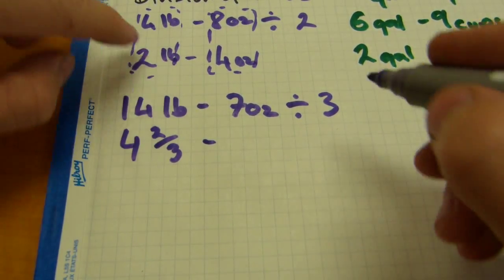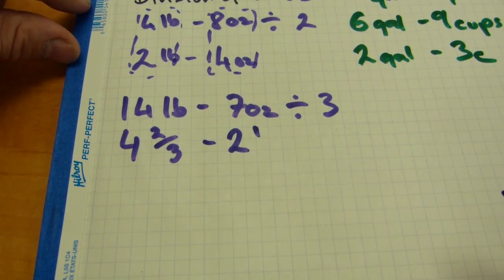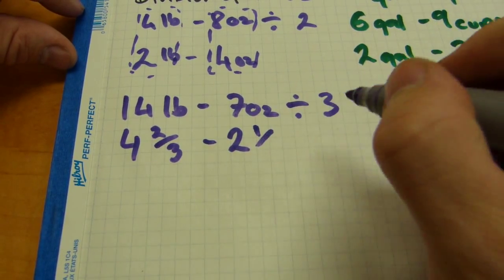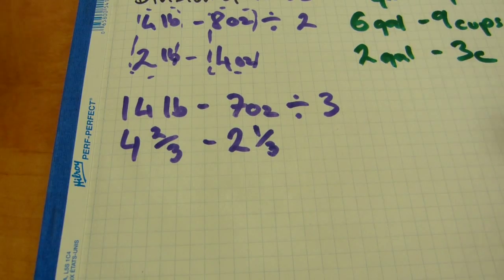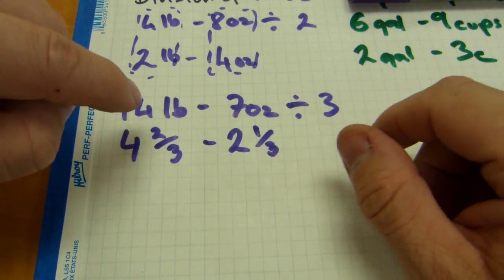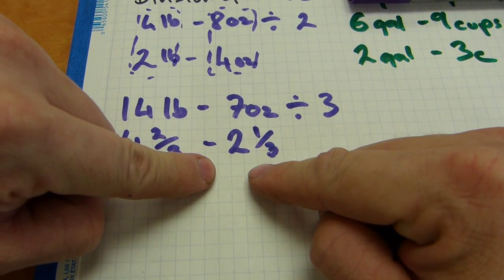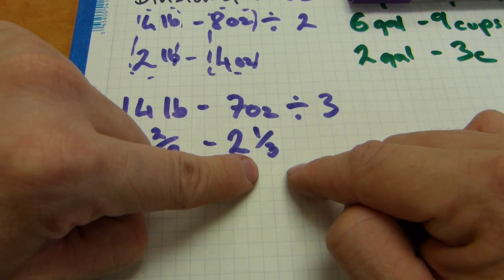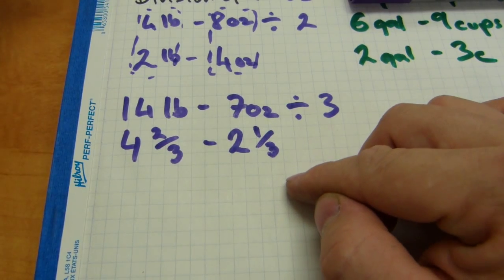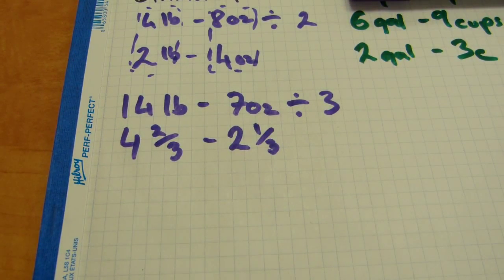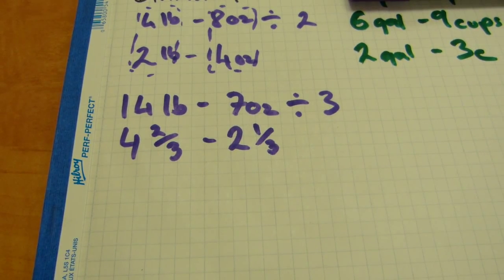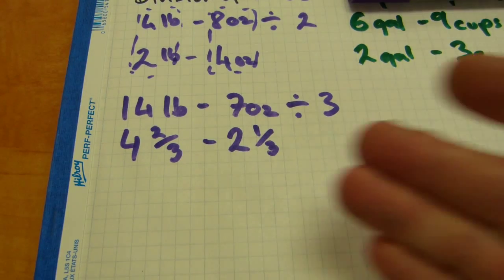We repeat the same process with the ounces. 7 divided by 3 is 2, with a remainder of 1, giving us 2 and 1-third ounces. Think it through: if you have 7 divided into 3 groups, each group has 2 and 1-third. You have 2 plus 2 plus 2, and 1-third plus 1-third plus 1-third. In total that's 6, and three thirds makes a whole, so 6 plus 1 is 7. Division works perfectly with fractions — a fraction is a division that isn't carried out, only indicated.